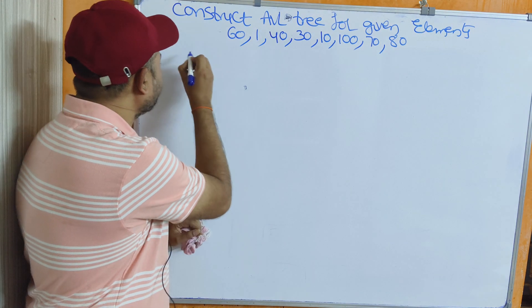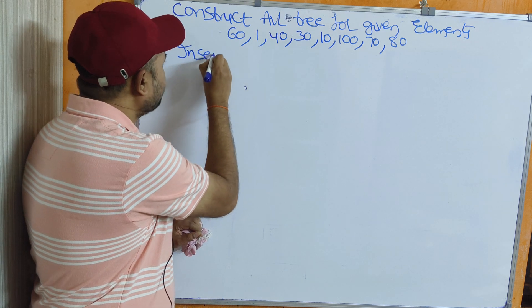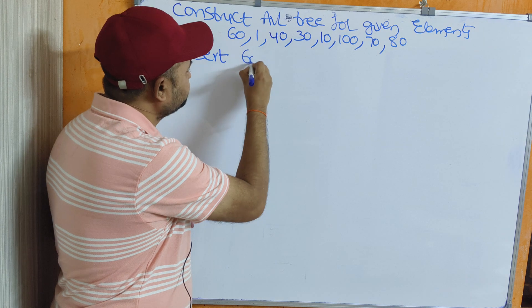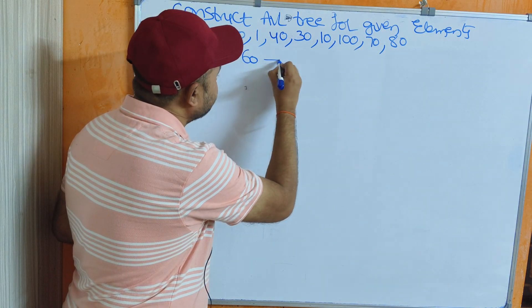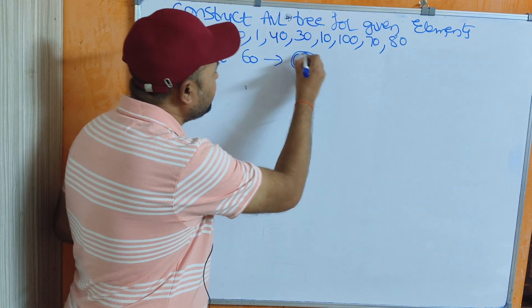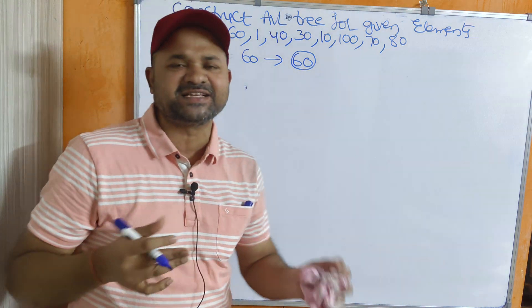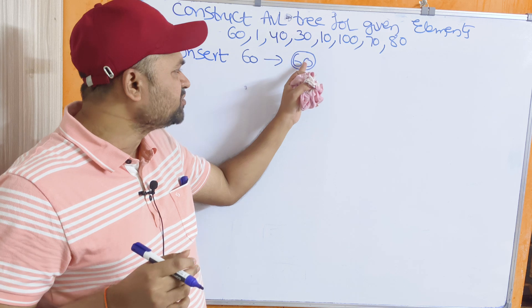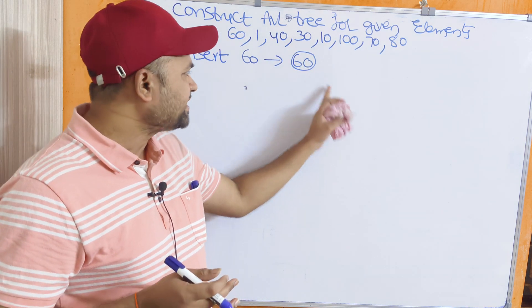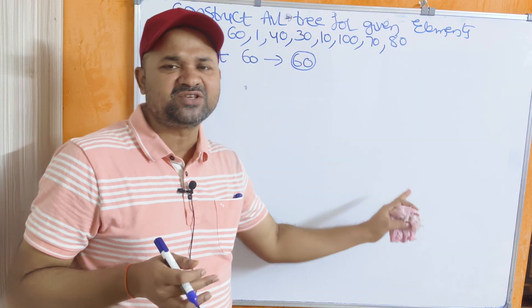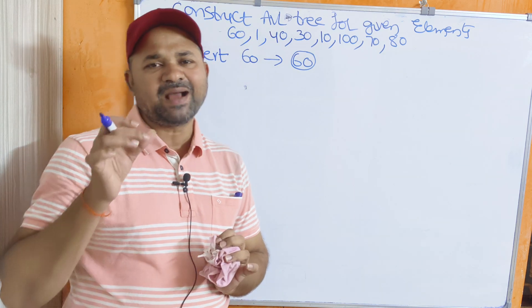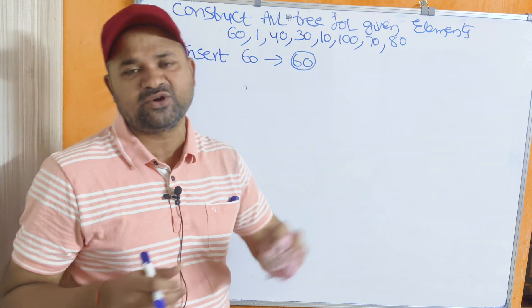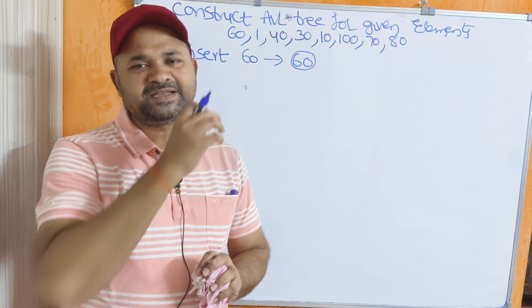First, let us insert the first element. Construct or insert — both operations are the same. So insert 60; here 60 is the root node. AVL tree is nothing but a binary search tree, where the left subtree contains values less than the root and the right subtree contains values greater than the root. But we have to maintain the balance factor for each and every node in the tree, so that the tree should be balanced.